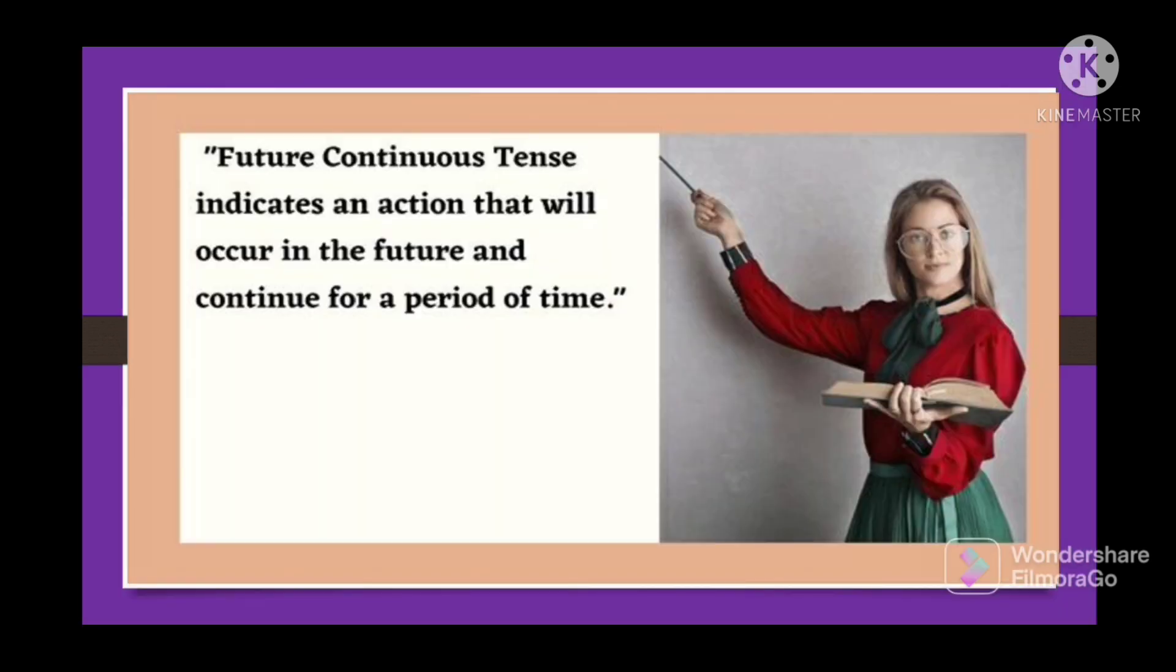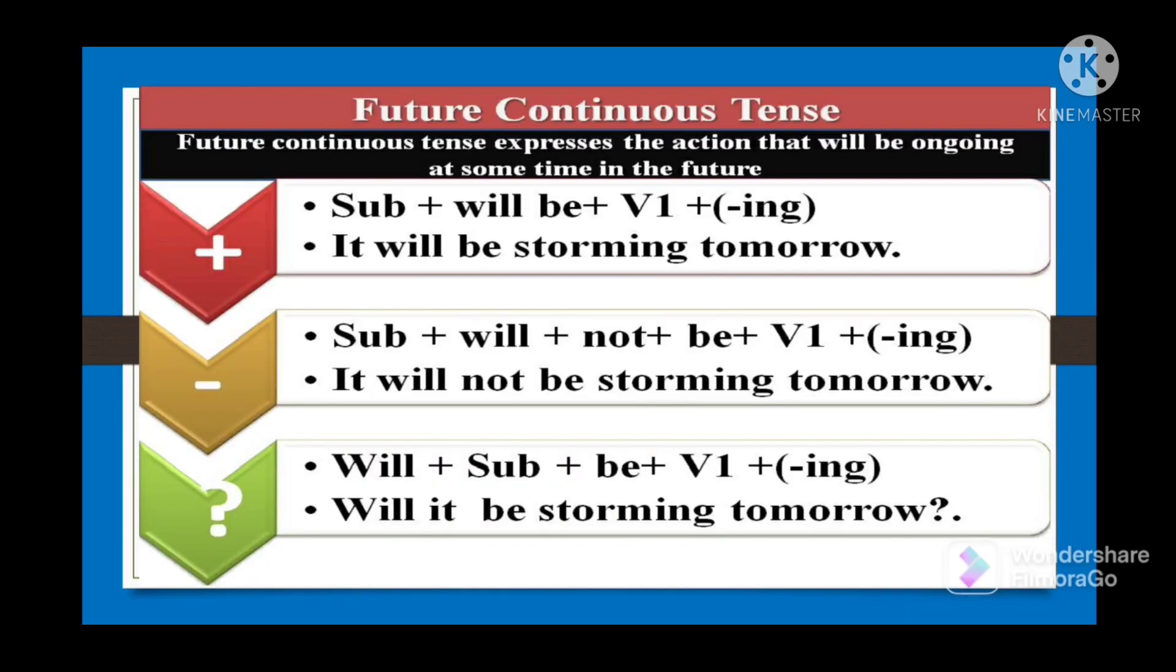Now let us see what is future continuous tense. Future continuous tense indicates an action that will occur in the future and continue for a period of time, for some period of time. This future action will continue, so for that sake we use future continuous tense. See now, like examples if you see: It will be storming tomorrow. Next, it is for affirmative sentence. Next, for negative sentence: It will not be storming tomorrow. Next, for question: Will it be storming tomorrow?